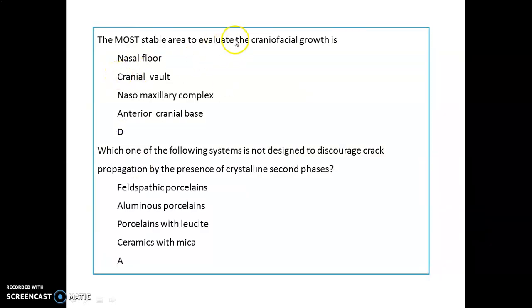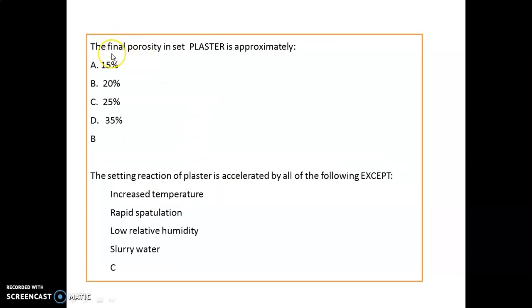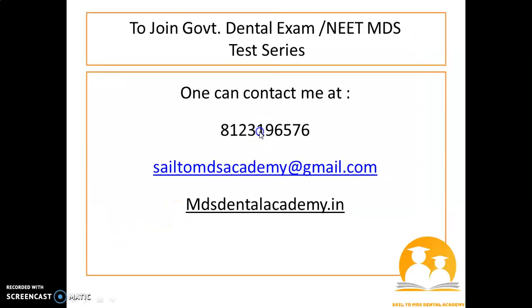The most stable area to evaluate craniofacial growth is the anterior cranial base. Among the following, the system not designed to discourage crack propagation by the presence of crystalline second phases is felspathic porcelain. The final porosity in set plaster is about 20 percent. The setting reaction of plaster is accelerated by all of the following except low relative humidity; increasing temperature, rapid saturation, or slurry water can increase the setting reaction of plaster.